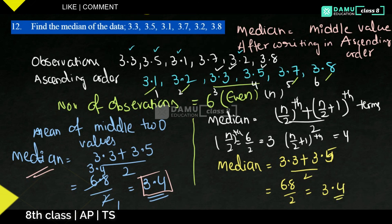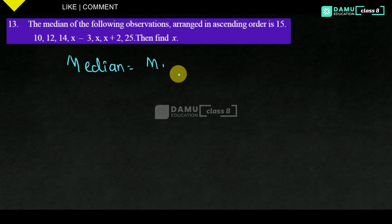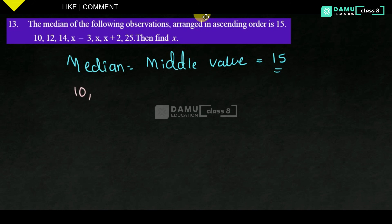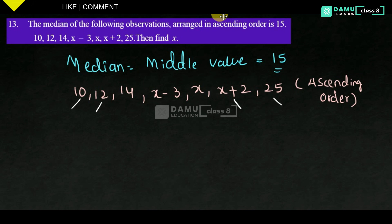The next question: the median of the following observations arranged in ascending order is 15. The data is: 12, 14, x minus 3, x, x, x plus 2, 25, already in ascending order. Canceling from both ends — first and last, then next pair — leaves x minus 3 as the middle value, which is the median.